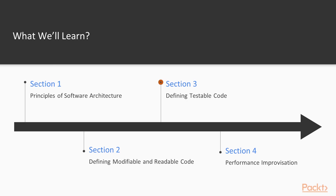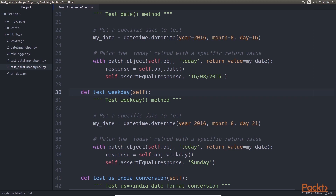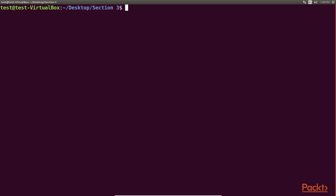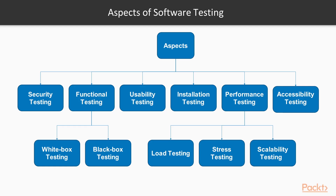Section 3: Defining Testable Code. It helps you understand the architectural quality attributes of testability and how to architect Python applications for testability. You will also learn about various aspects of testability and software testing and the different libraries and modules available in Python to define testable applications.